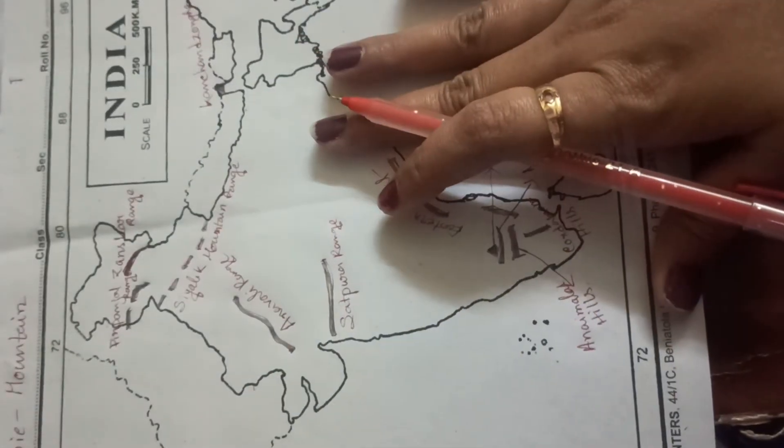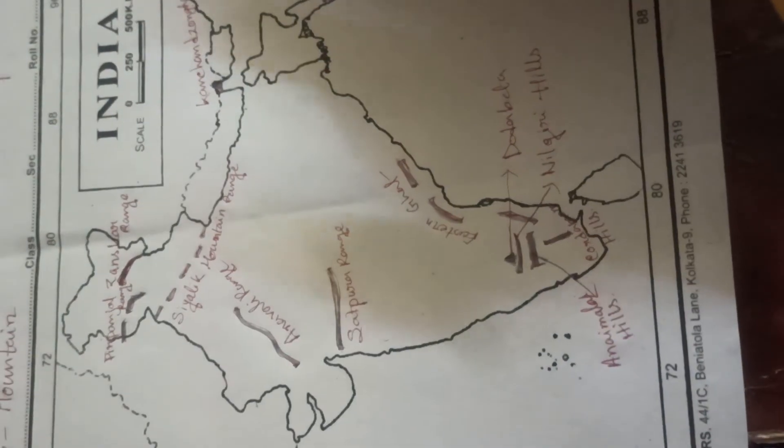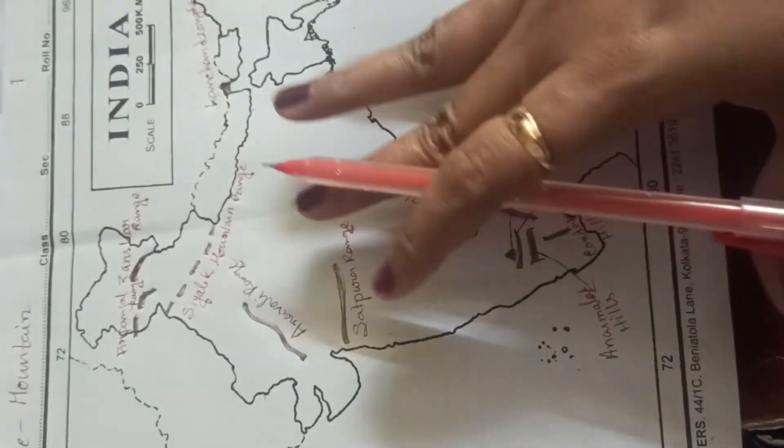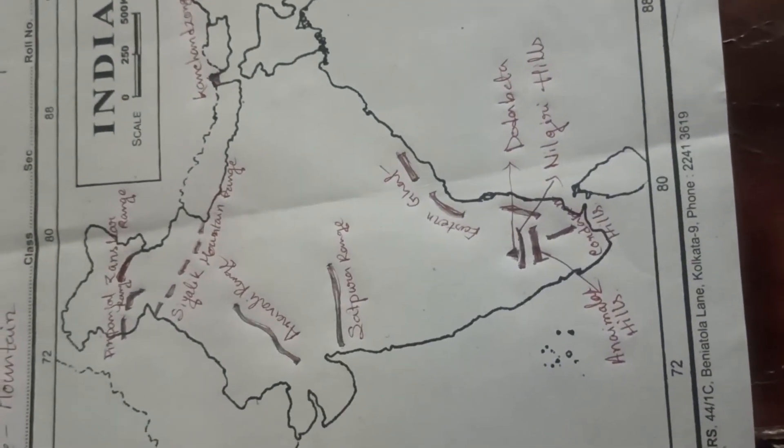So this is it for today. There are 10 points. And there is another video I already sent. There are 10 points. These are the main mountain ranges. Okay. Practice this. Thank you everyone.